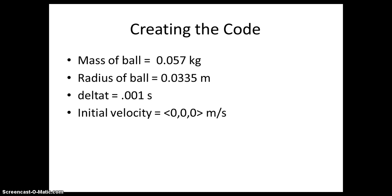To create the code, I first input the initial variables including the mass and radius of the ball, as well as a delta t of 0.001 seconds and an initial velocity of 0 meters per second starting at the origin.